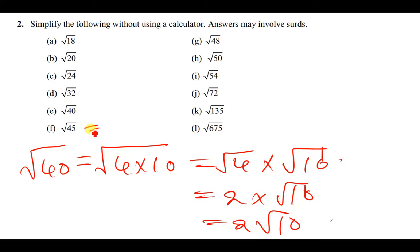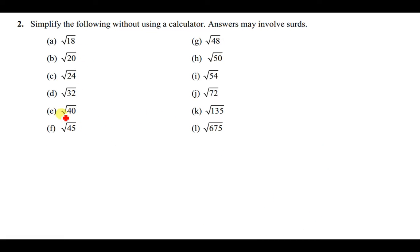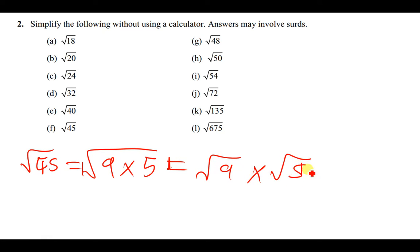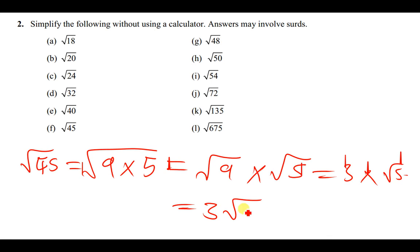For √45: 9 can go into 45, so we can write the square root of 45 as the square root of 9 times 5. This is just the same as the square root of 9 times the square root of 5, which gives us 3 times the square root of 5. The final answer is therefore 3√5.